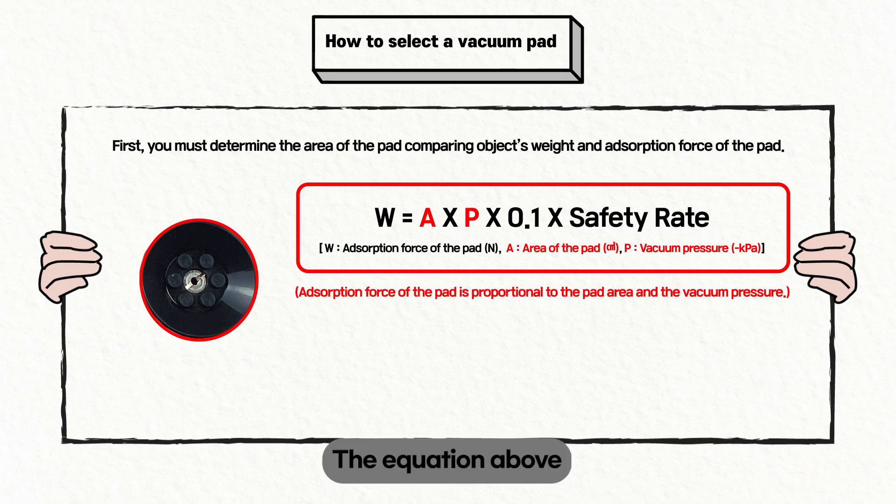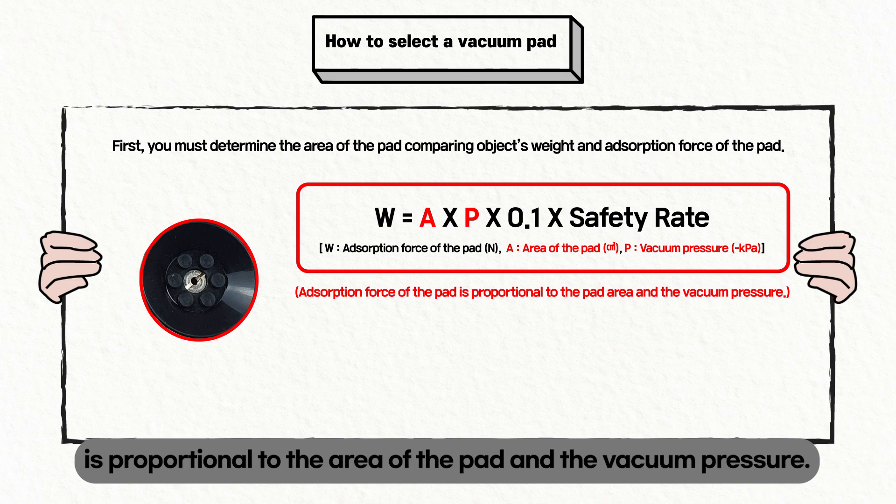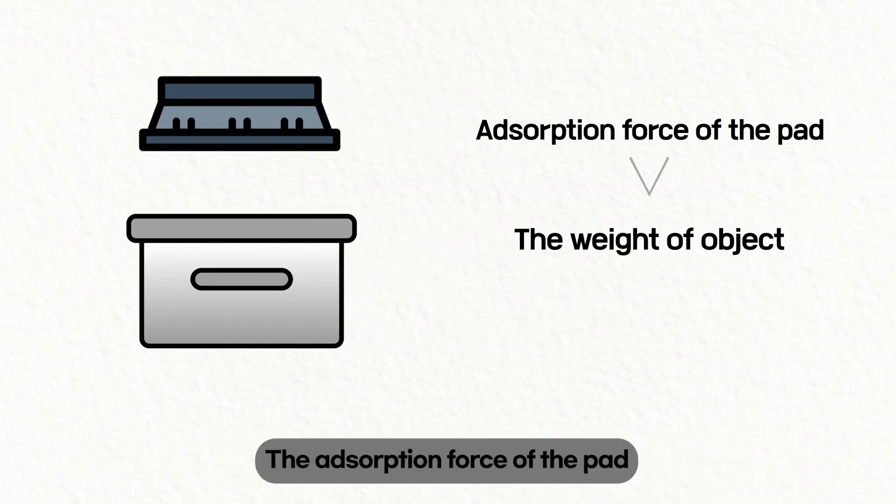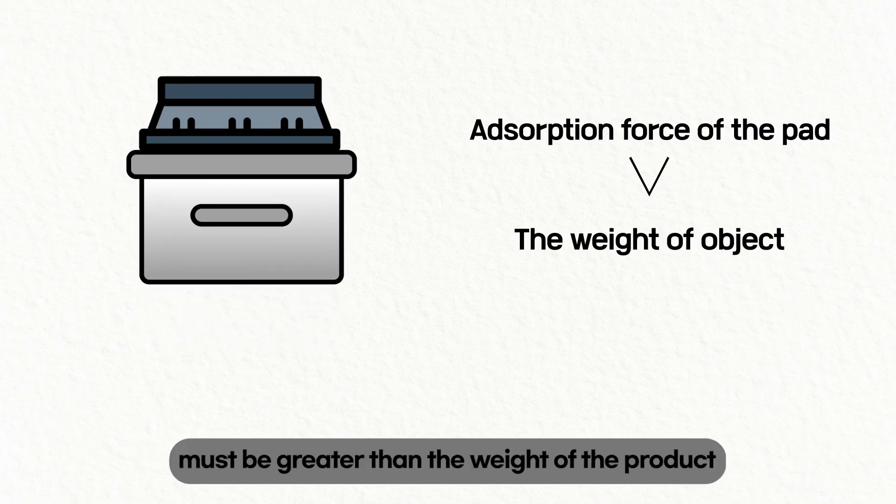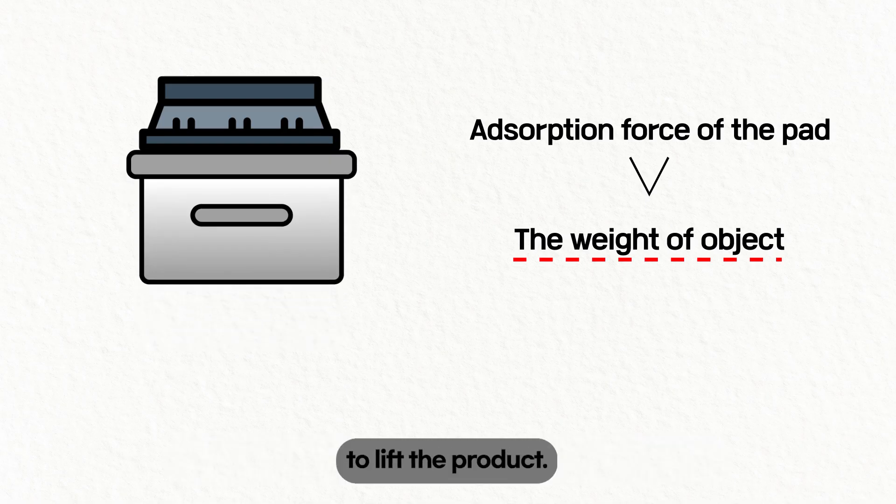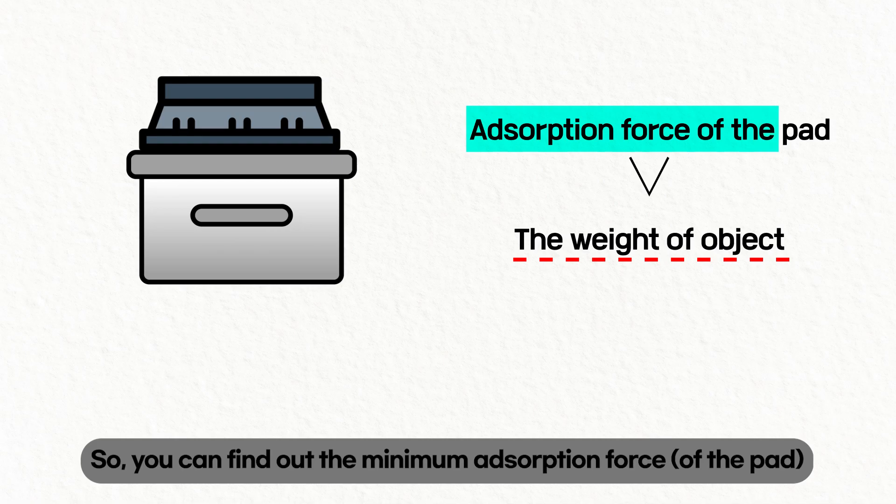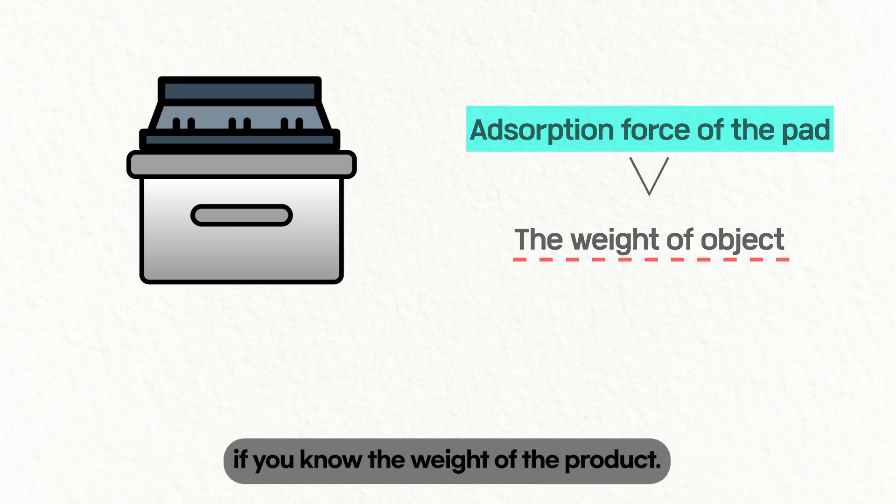The equation above shows that the absorption force of the pad is proportional to the area of the pad and the vacuum pressure. The absorption force of the pad must be greater than the weight of the product to lift the product. So, you can find out the minimum absorption force if you know the weight of the product.